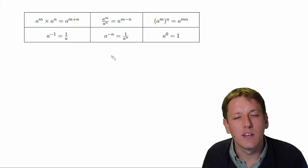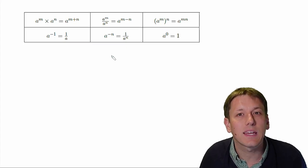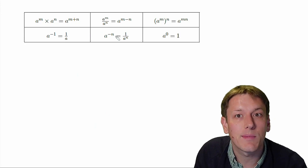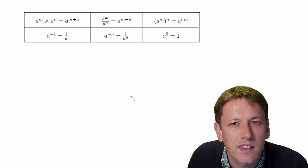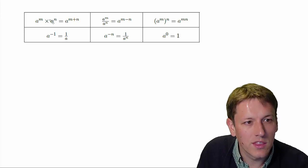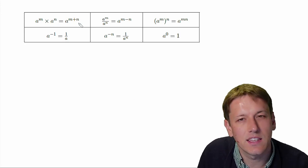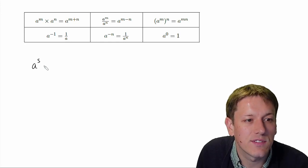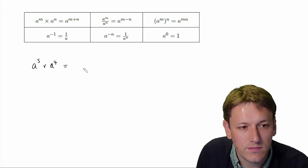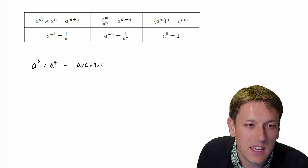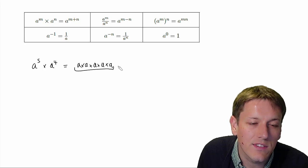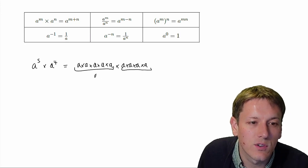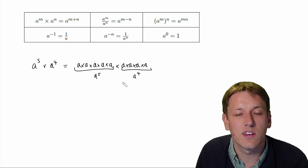It's really important that we know how to use these confidently in more complicated situations, and that we also really understand why they work. So we're going to start by talking about each one of these rules in turn and really thinking about justifying them carefully. The first one: A to the M times A to the N is A to the M plus N. So what I'm saying here is if I've got something like A to the 5 and I multiply it by A to the 4, I can do A times A times A times A times A — that would be A to the 5 — and I multiply it by A times A times A times A, that would be A to the 4.